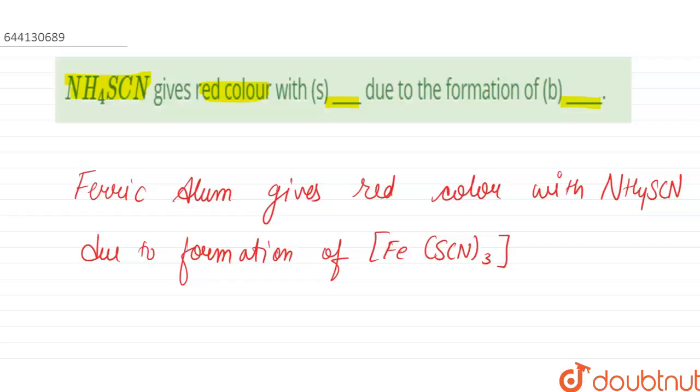alum is ammonium iron(III) sulfate. Ferric alum is basically ammonium iron(III) sulfate.